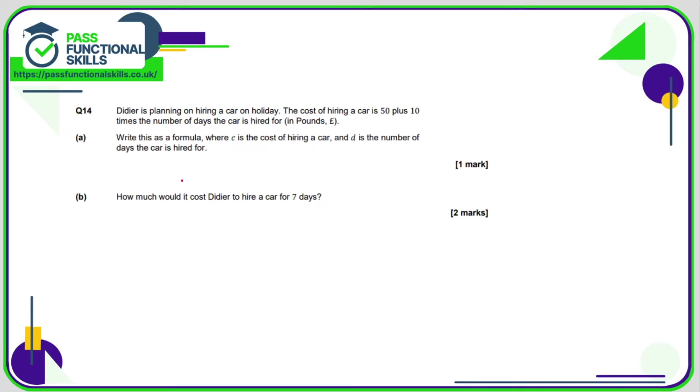Question number 14: the cost of hiring a car is £50 plus £10 times the number of days the car is hired for. So therefore the cost—we'll say c—is going to be £50 plus £10 times the number of days. That means 10 times d, so 50 + 10d or 10d + 50.